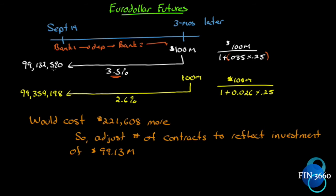They don't want to spend more than $99,132,590. The contract ended such that they'll only get 2.6% on this deposit, so the contract better make up the difference. If we discount 2.6% back for three months, they have to deposit $99,354,198 — it's going to cost $221,608 more than what they planned. So they have to get this $221,608 from somewhere. We already hedged on 100 contracts, and the futures contract paid off by $225,000 — but we only need $221,608 because the deposit is $99.13 million, not $100 million; we just get the $100M back.